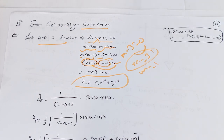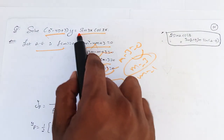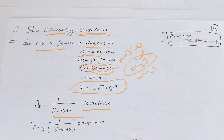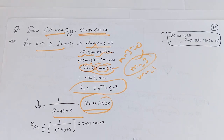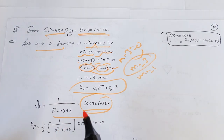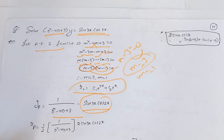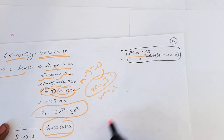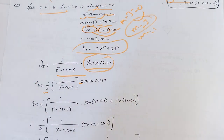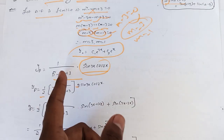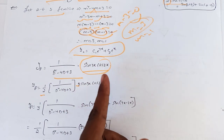yp is equal to 1 over f(D) applied to sin 3x cos 2x. We divide by 2, and apply to two sin 3x cos 2x.